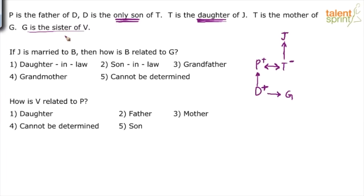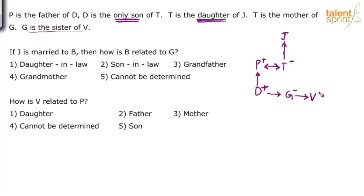G is the sister of V. So definitely G is female — the sister of V. So V is the sibling of G. Now, most of you felt that V's gender is not given because the last statement said G is the sister of V. But whether V is the sister or brother of G was not very clear.